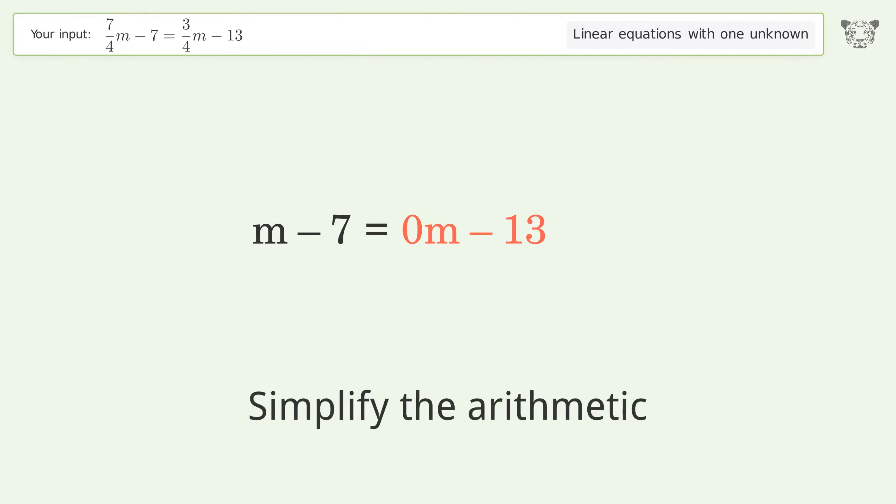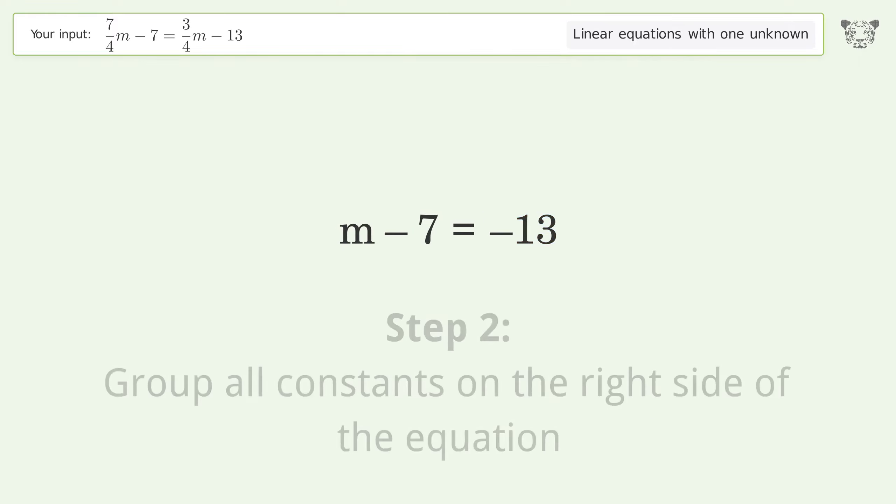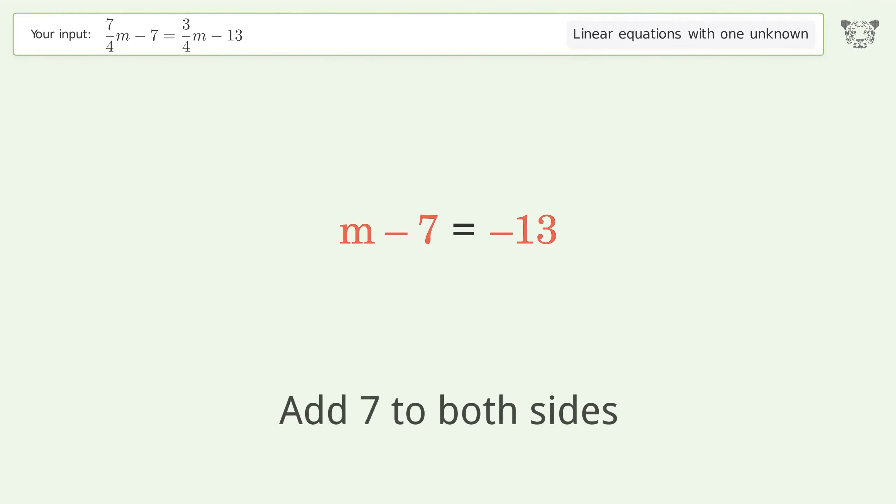Simplify the arithmetic. Group all constants on the right side of the equation. Add 7 to both sides.